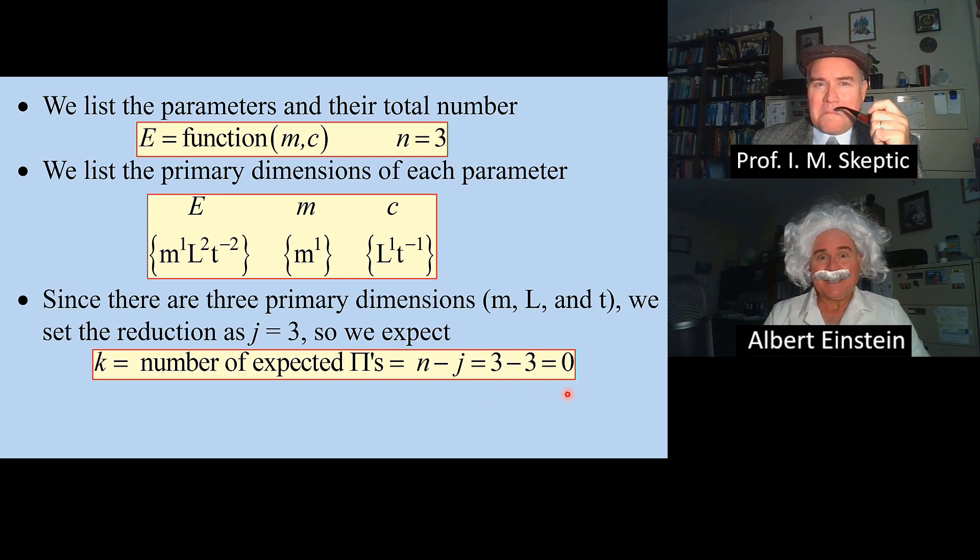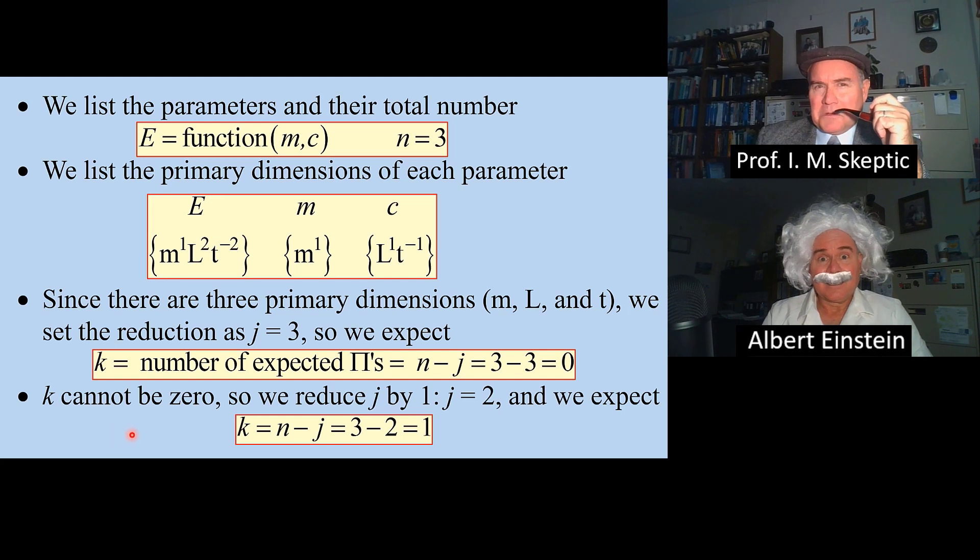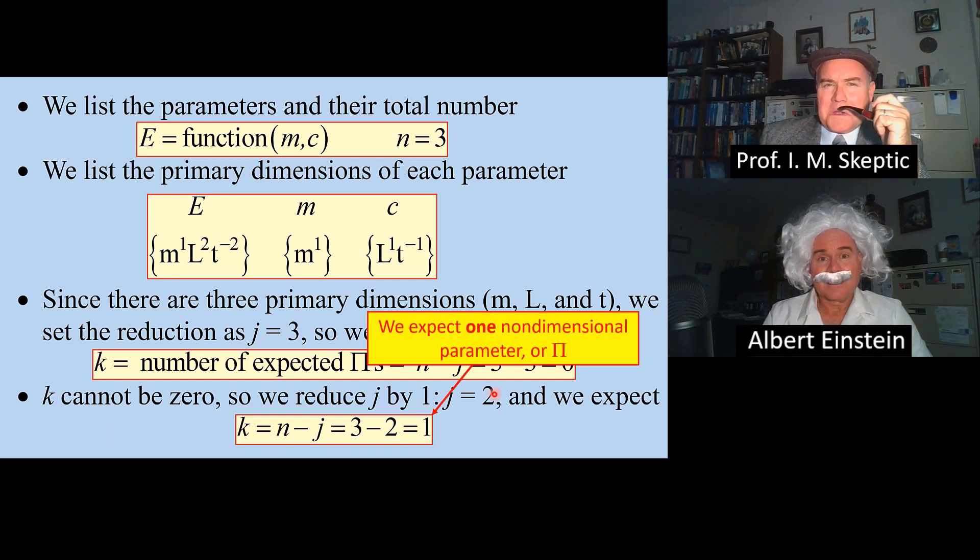That makes no sense. We cannot have zero pi's. True. For cases like this, we reduce j by 1. When j equals 2, we get k equals 1. Thus, we expect one non-dimensional parameter, or pi.